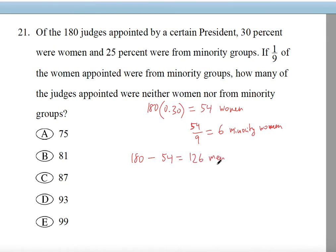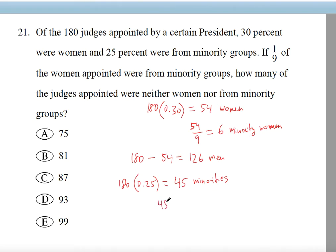126 men also have minorities among them. So how many minority people are there in total? 180 multiplied by 25%, which is 0.25, gives you 45 minorities. Now 45 minorities include the 6 minority women, so if we subtract the 6, we get 39 men who are minorities.